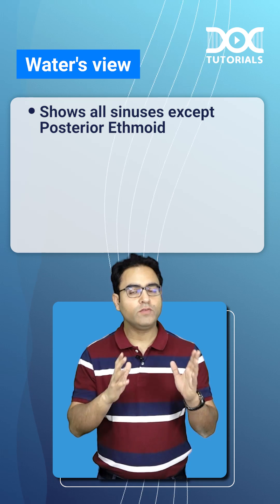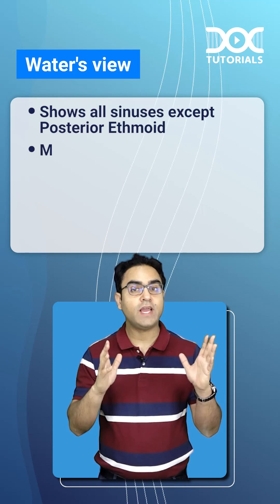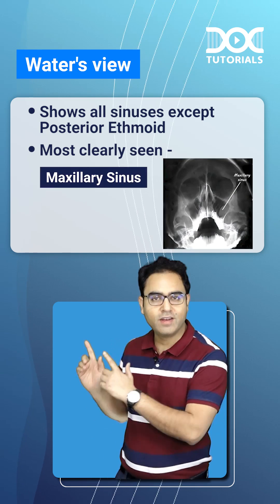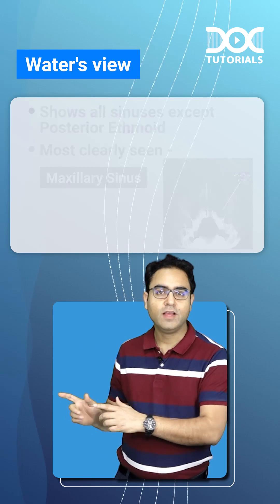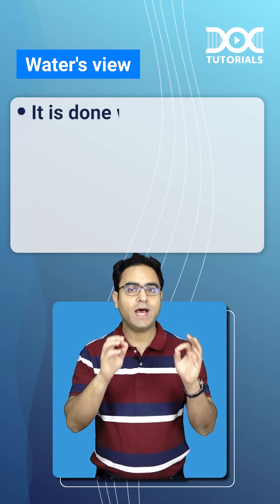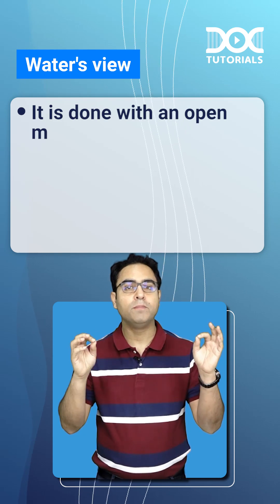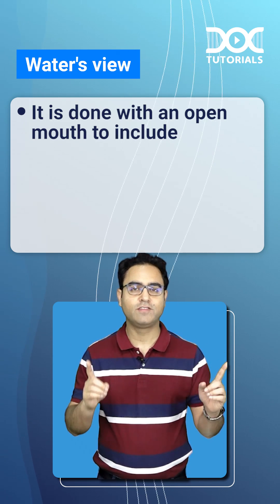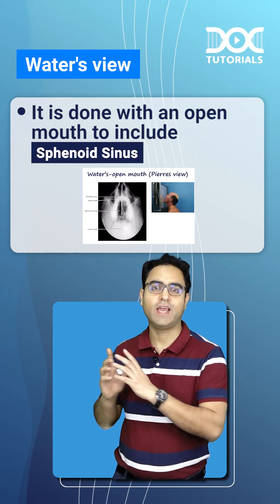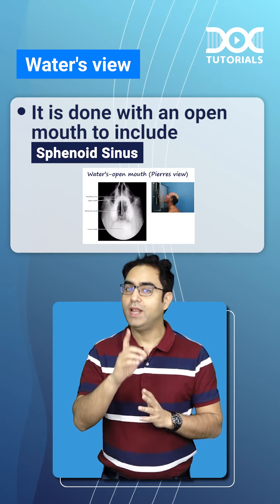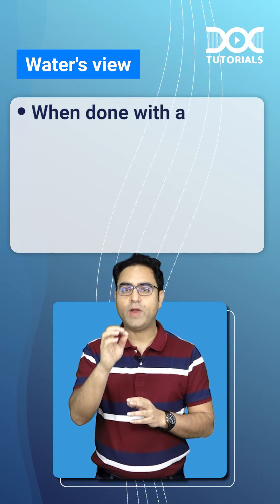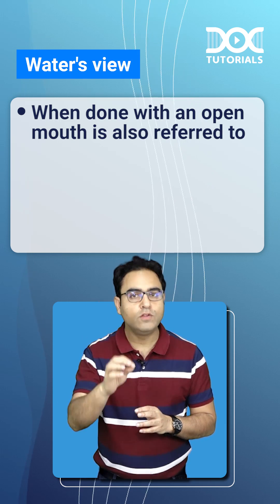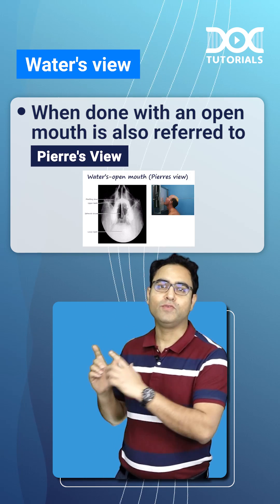One more question: Water's view shows which sinus most clearly? The answer is the maxillary sinus. Water's view is generally done with open mouth to include which sinus in the x-ray? The answer is the sphenoid sinus. Water's view done with open mouth is also referred to as PRS view.